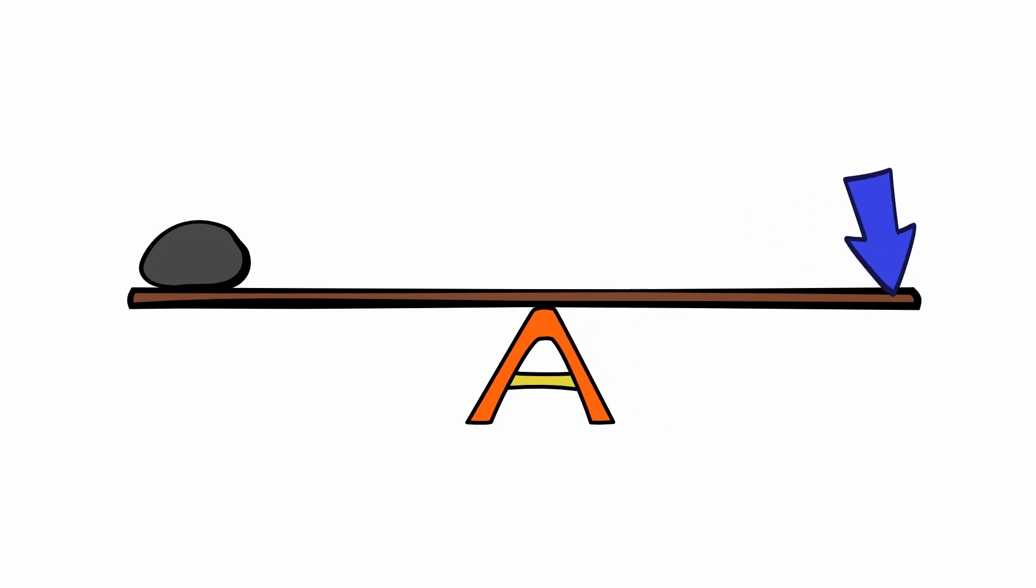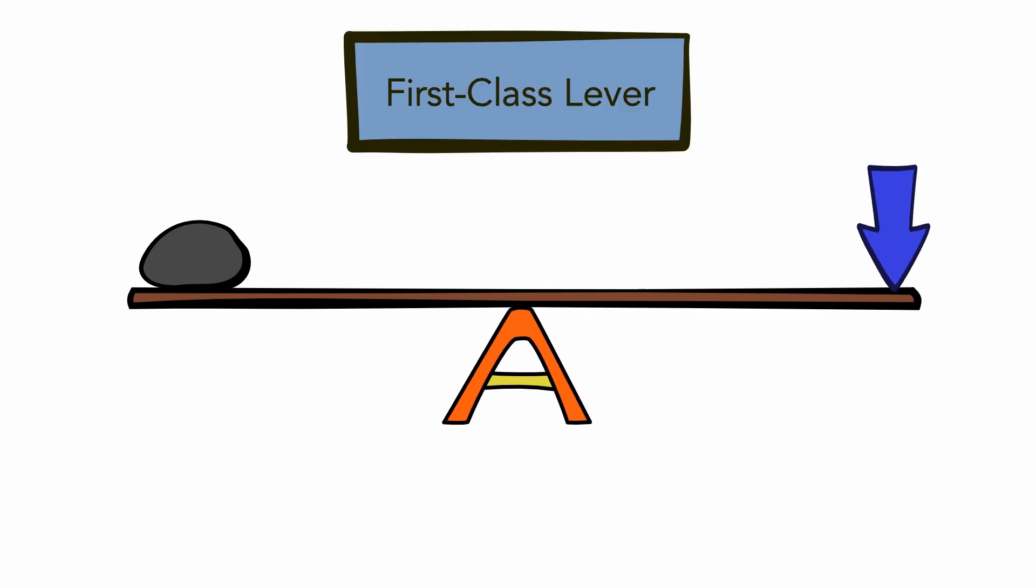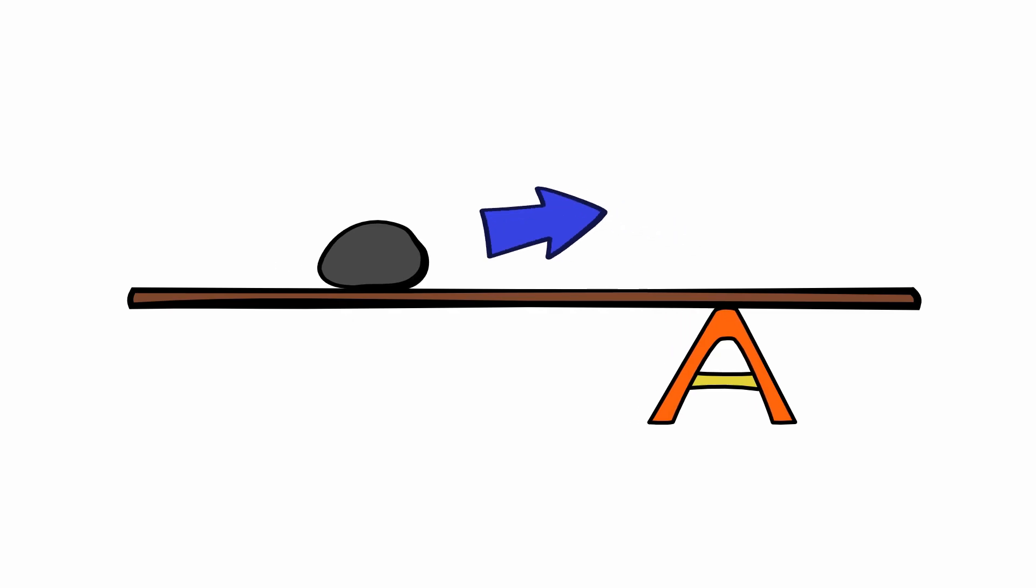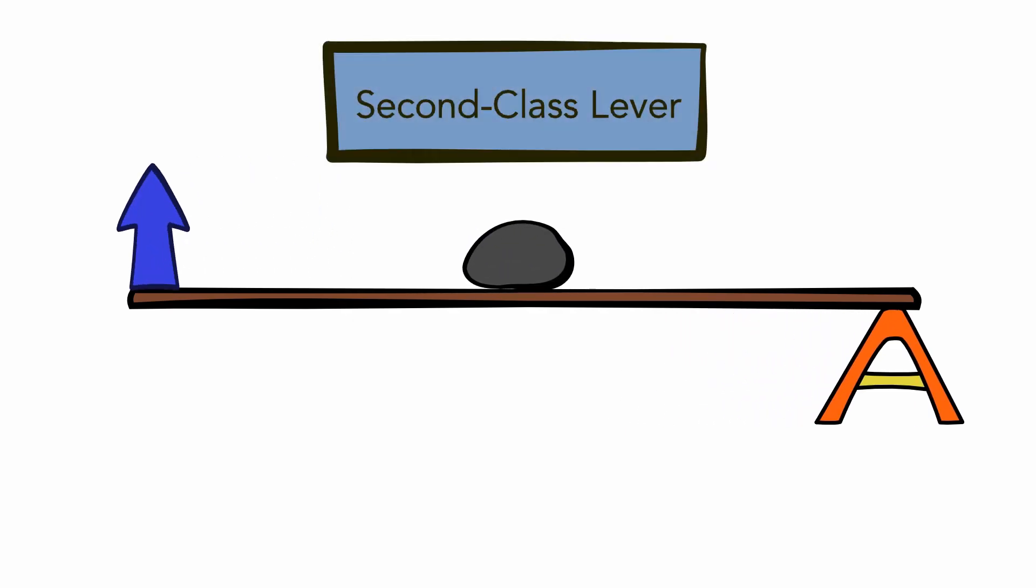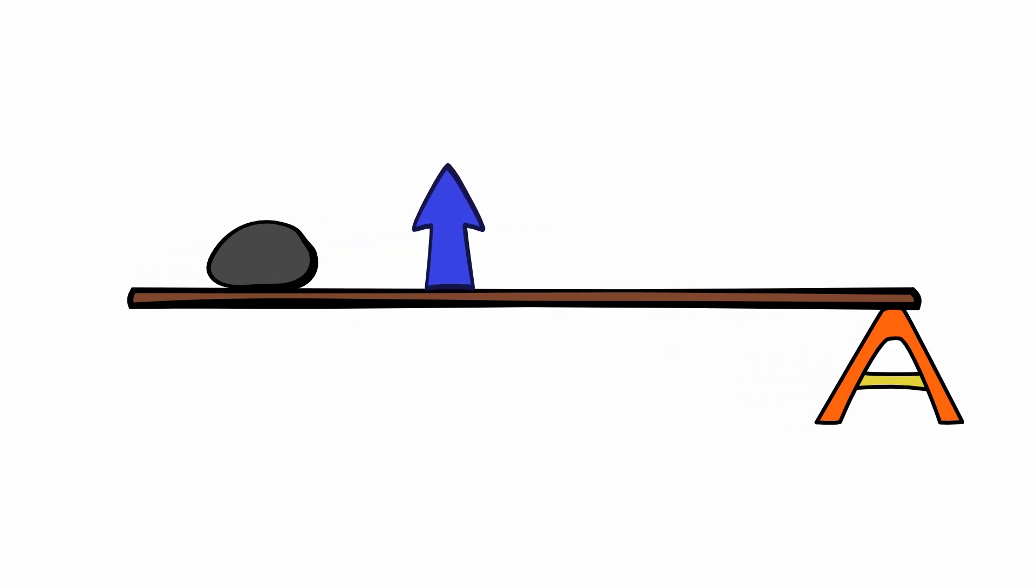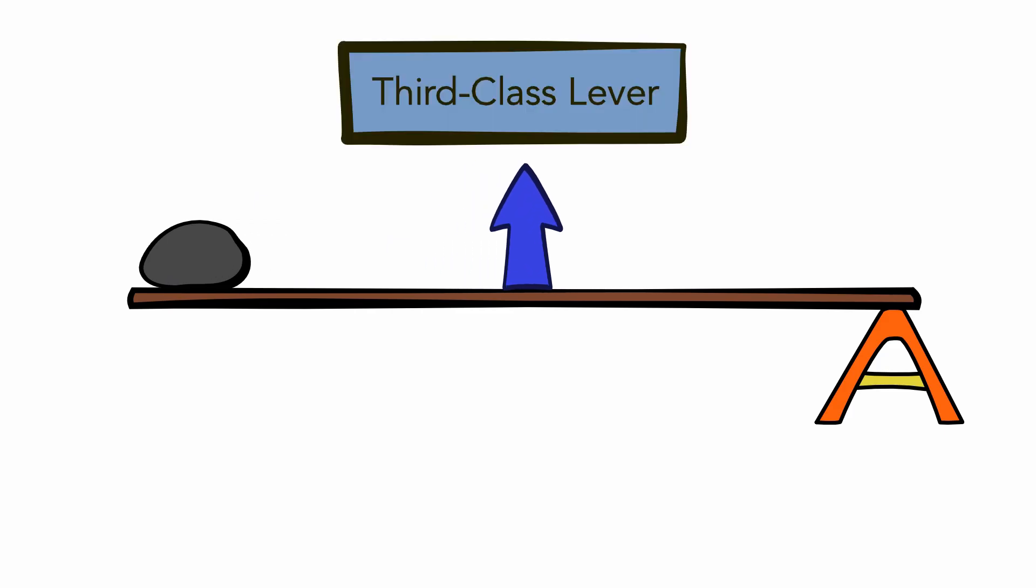When the fulcrum is placed between the effort and the resistance, we get a first-class lever. When the resistance is placed in the middle, we get a second-class lever. And finally, when the effort is in the middle, we get a third-class lever.